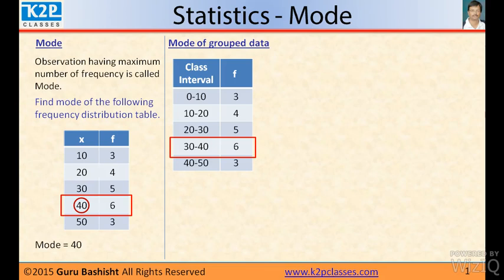If it is not a group data, like in the previous example, it is very easy to say that mode is 40. But here it is a little bit difficult to guess because the mode can be anything between 30 to 40. Now we will see how to guess this mode between 30 to 40, a graphical method.